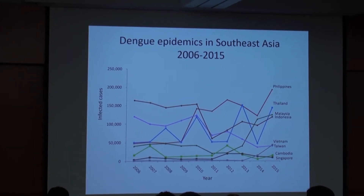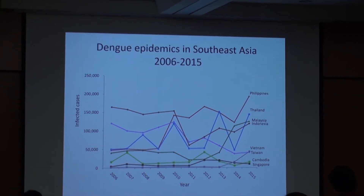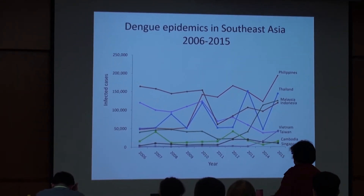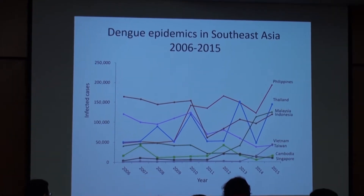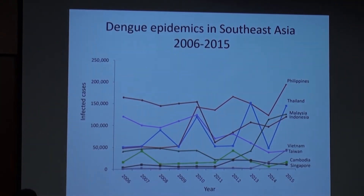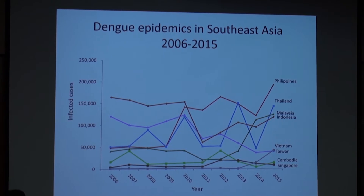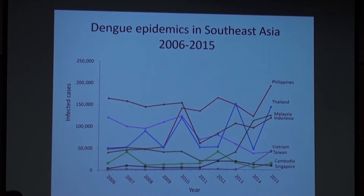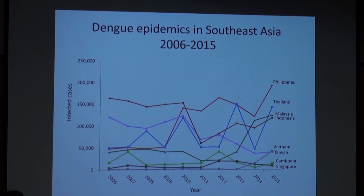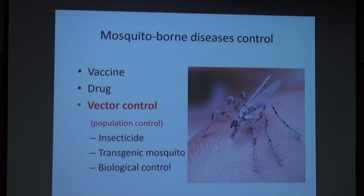If we look at our neighboring countries—for example, Philippines, Thailand, Malaysia, and Indonesia—they also encountered serious Dengue outbreaks in the past ten years, with case counts between 100,000 to 150,000. Vietnam, Cambodia, and Singapore also encountered outbreaks. This indicates that this virus is present not only in Taiwan but also in several tropical and subtropical countries.